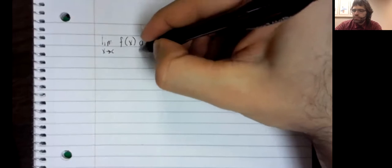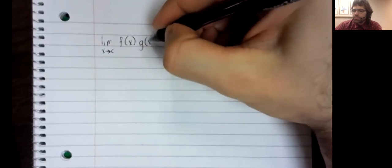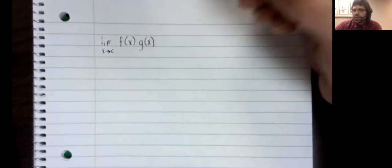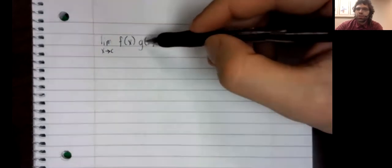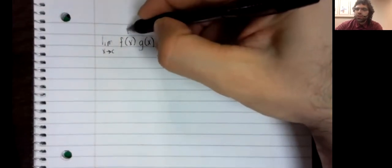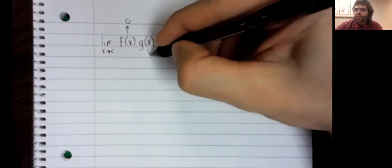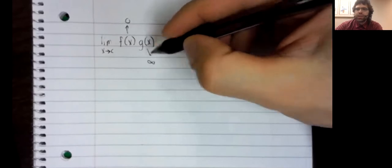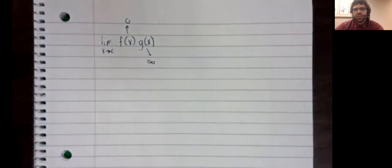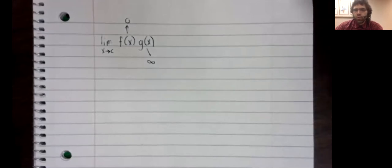Suppose you're taking the limit of a product, and suppose that one of these terms is going to zero and the other is going to infinity. This is an indeterminate form.